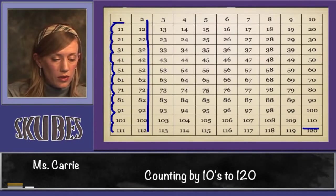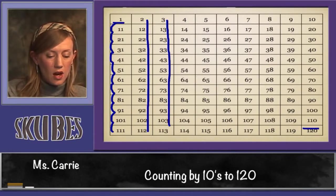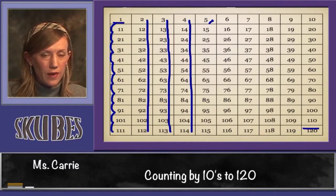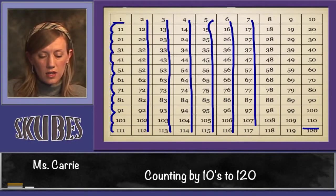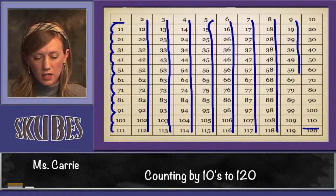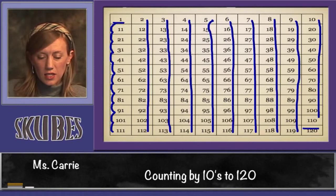If you start with a 3 and go down, they all end in a 3. If you start with the number 4 and go down, they all end with the 4. If you start with 5 and go down, they all end in a 5. These all end in a 6, these all end in a 7, these all end in an 8, these all end in a 9, and these numbers starting with 10 all end in a 0.